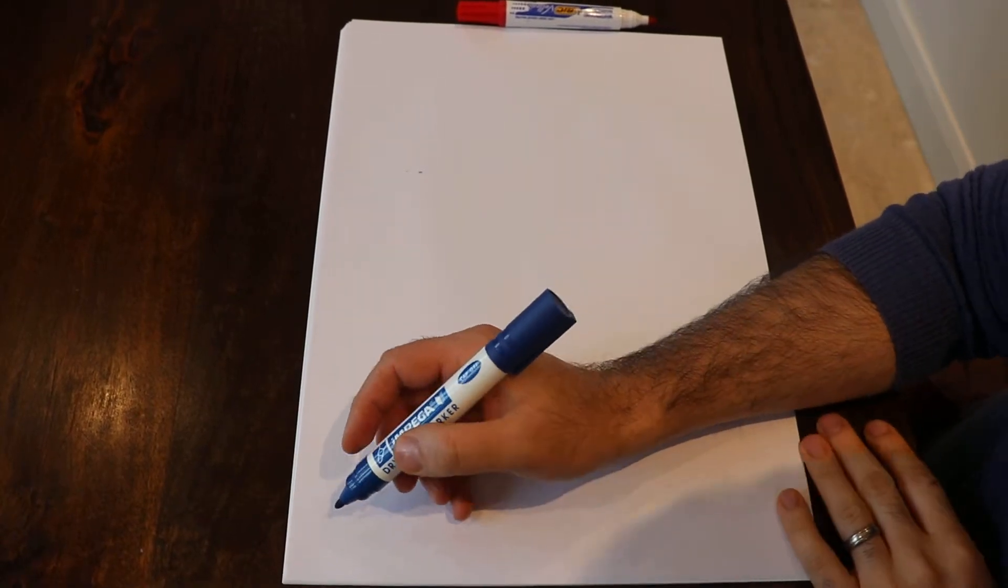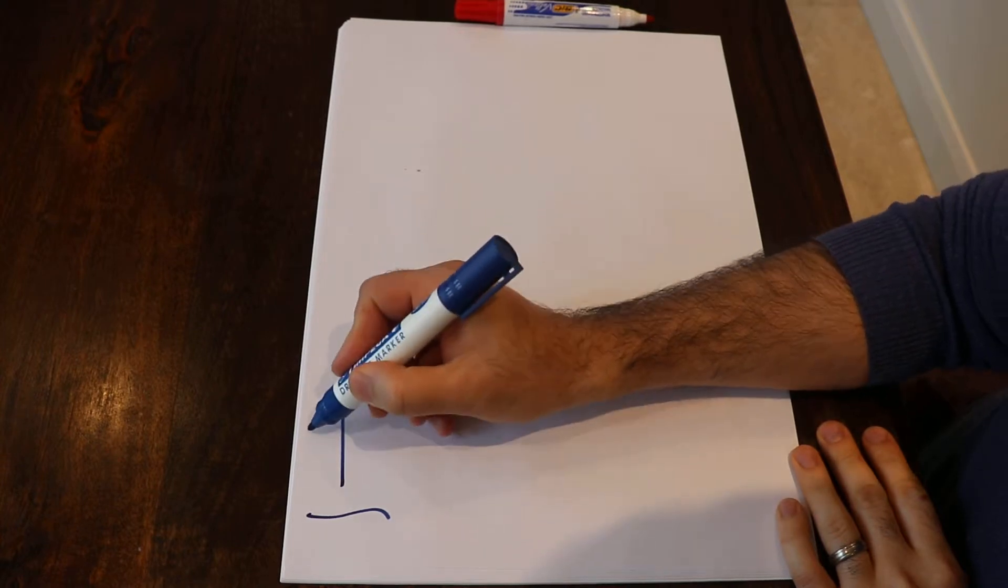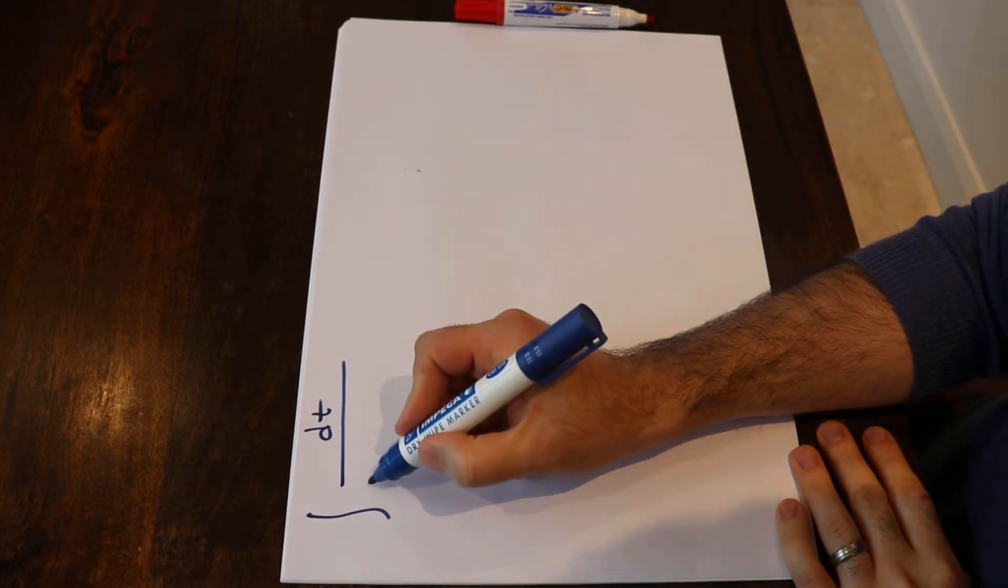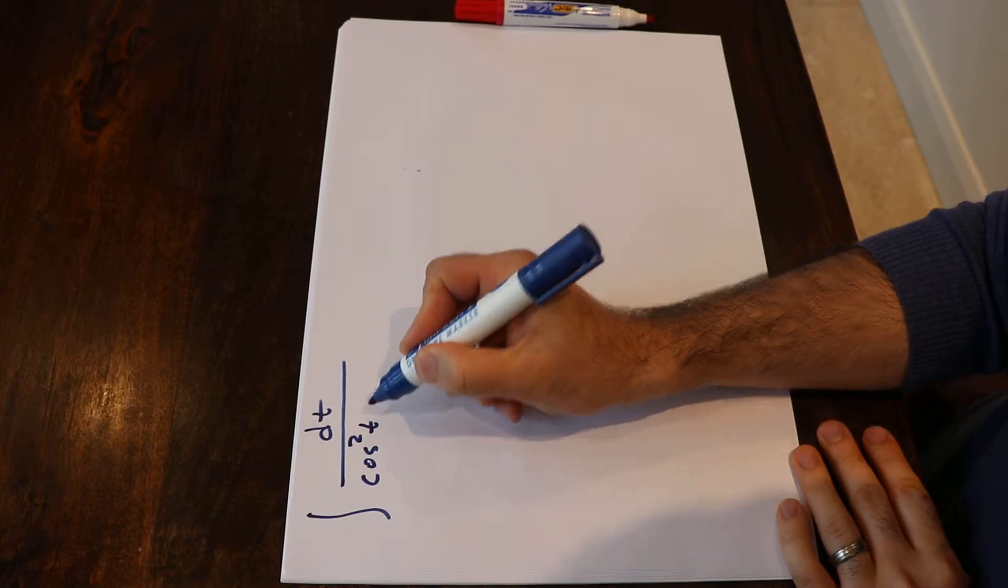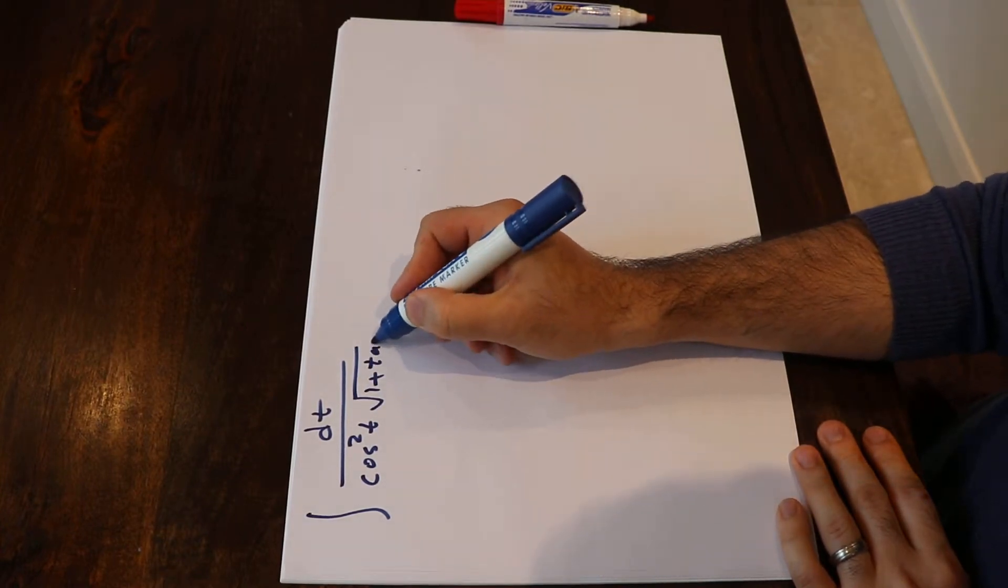Hello, I'm going to show you how to calculate the integral of dt over cosine square t times 1 plus tangent t.